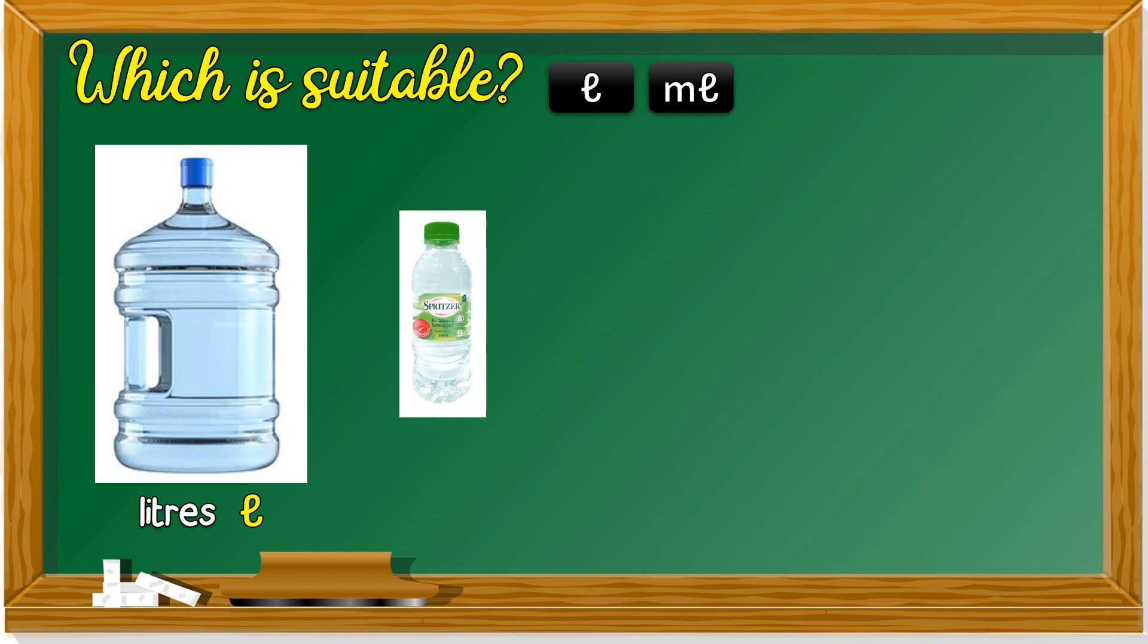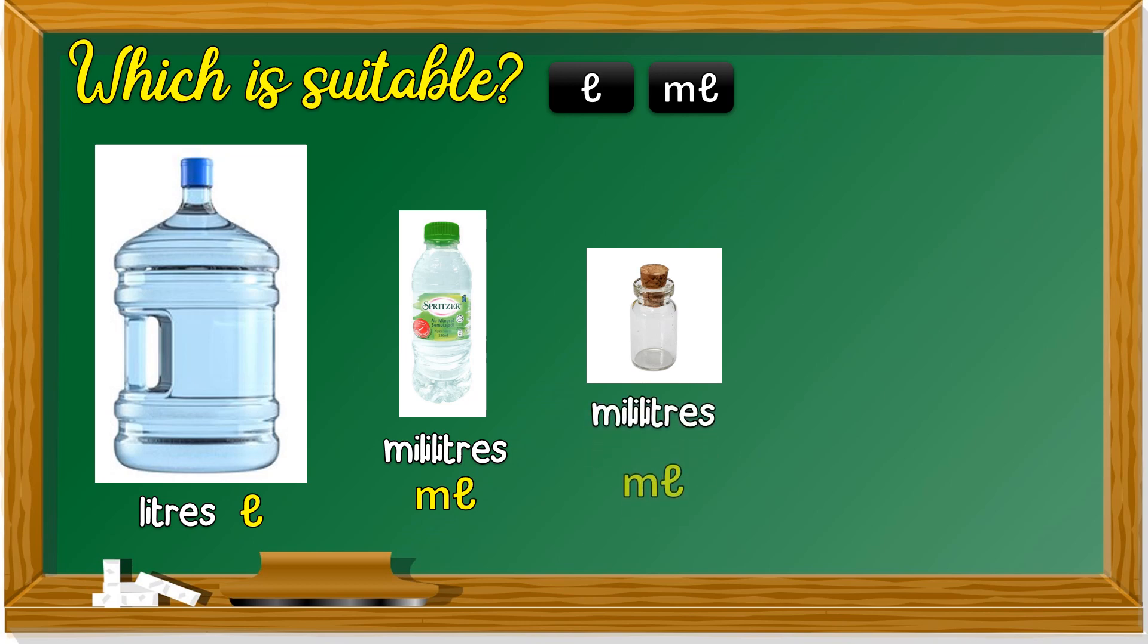Next, a small bottle of water. L or ML? ML, milliliters. Oh, this one. Such a tiny glass bottle. L or ML? Milliliters. ML.